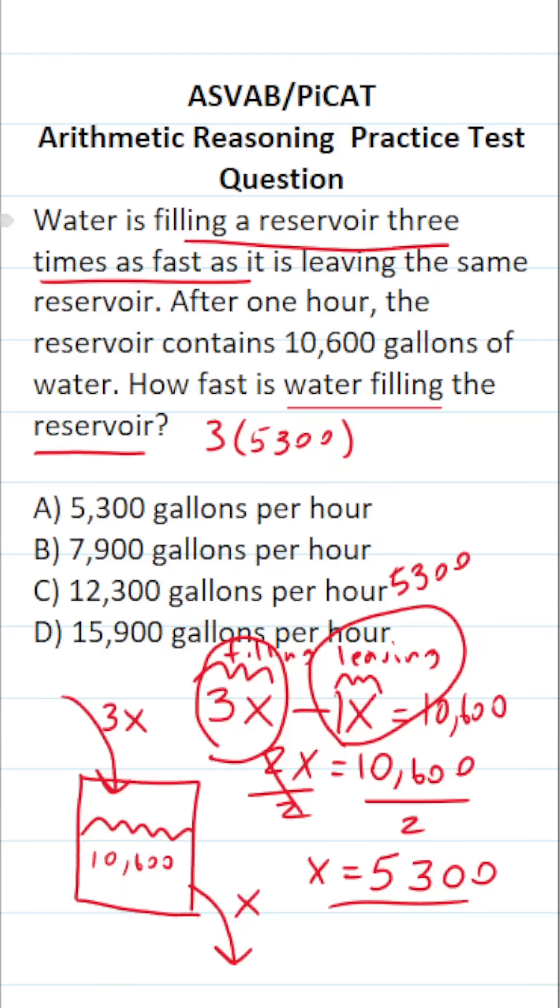If it's helpful, do this math off to the side. We have 5,300 times three. This is zero, zero. Three times three is nine. Three times five is 15. So water is filling the reservoir at a rate of D, 15,900 gallons per hour.